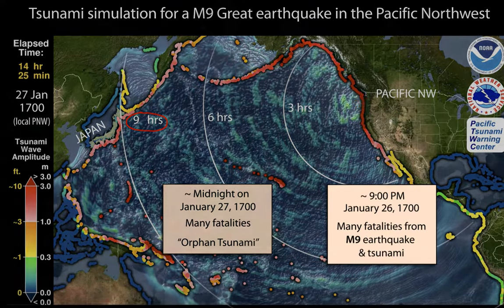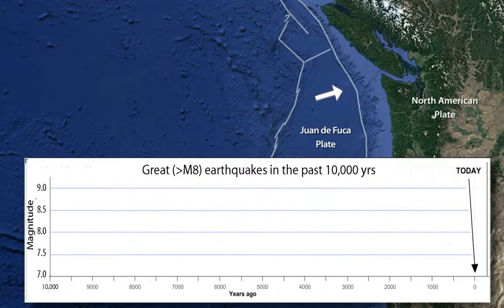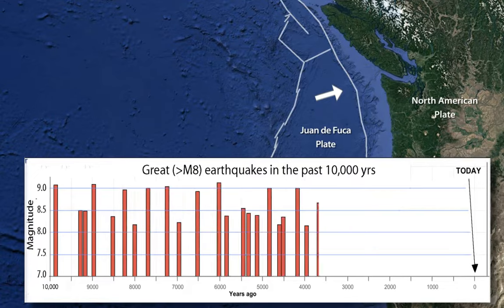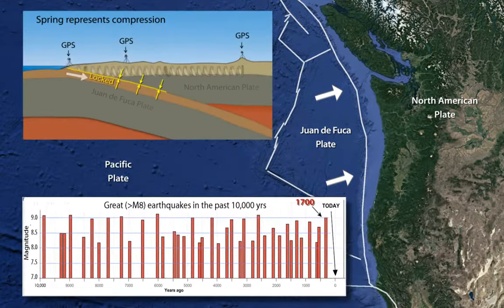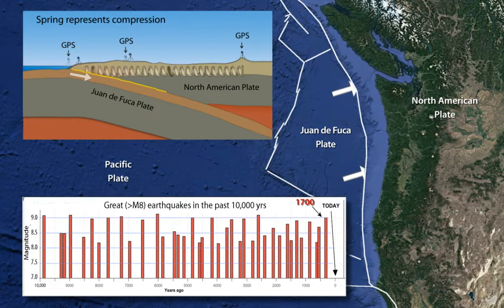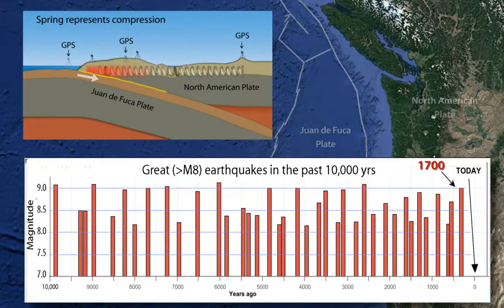Further geologic evidence from the Pacific Northwest includes repeated cycles of coastal tsunami deposits over thousands of years and offshore marine deposits that record great Cascadia earthquakes back to 10,000 years ago. When coupled with current GPS observations that the Cascadia continental margin is being compressed by the offshore Juan de Fuca Plate, it is clear that the Pacific Northwest will experience great megathrust earthquakes in the future.